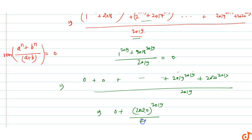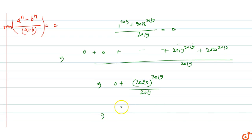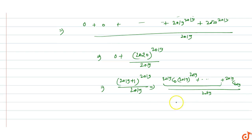So 2020 raised to power 2019 divided by 2019. This is 2019 plus 1 raised to power 2019 upon 2019. In the binomial expansion, we get 2019C0 times 2019 raised to power 2019 up to the last term 2019C2019 times 1 raised to power 2019, all upon 2019. All terms except the last one are divisible by 2019, so the remainder is 1.